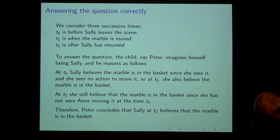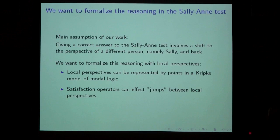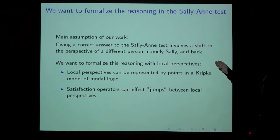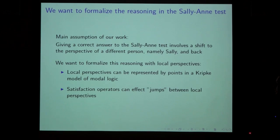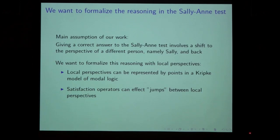It turns out that this can be formalized in hybrid logic. The main assumption in our work is that to give a correct answer, you perform a shift to the perspective of a different person — namely Sally — and then jump back again. More precisely, we take the points in the Kripke model of modal logic and let them stand for persons, bringing us back to Prior's egocentric logic. Then we use satisfaction operators to jump between local perspectives.